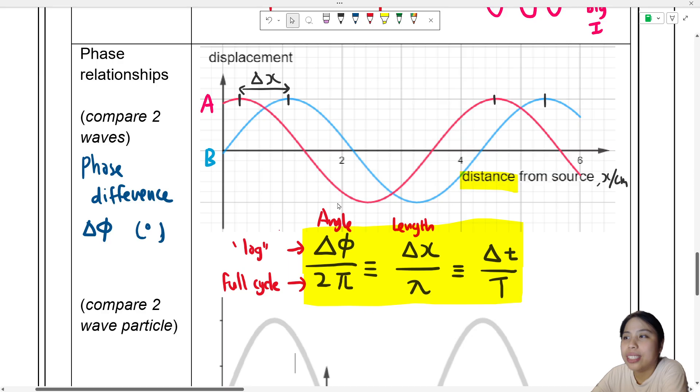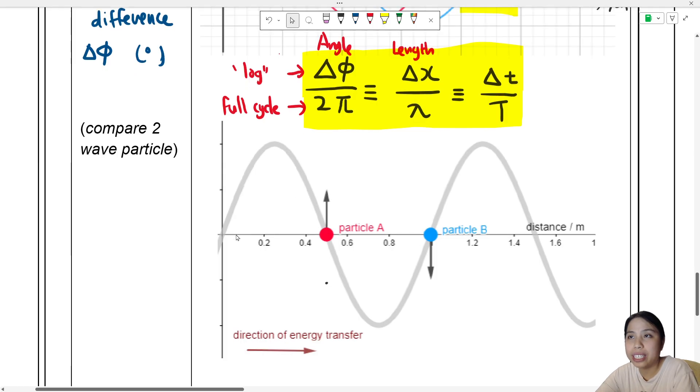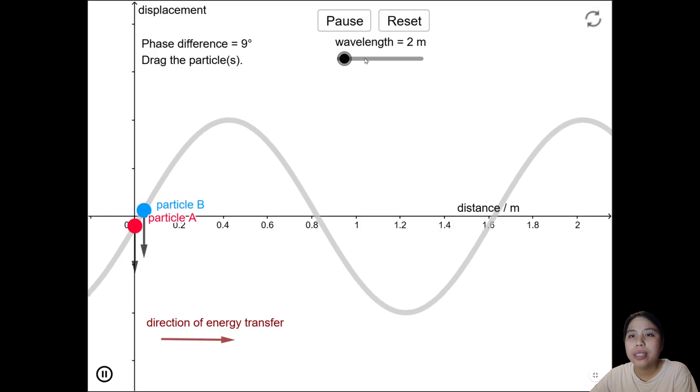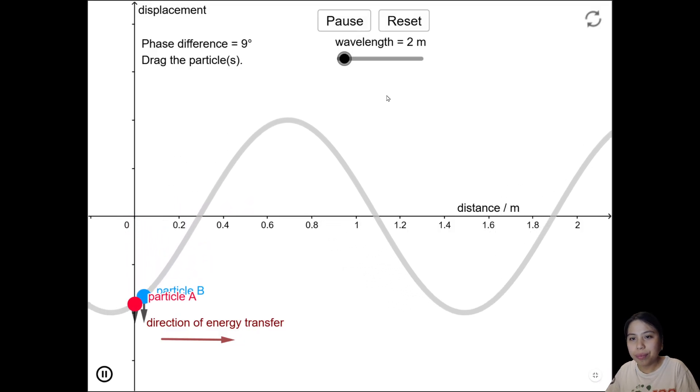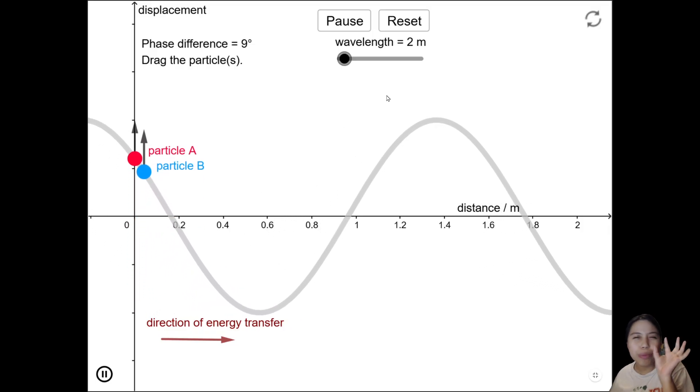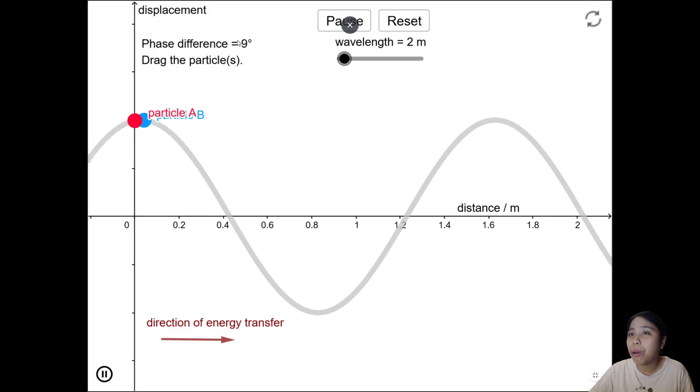Okay, next: sometimes instead of comparing two waves, you actually compare two particles. The same formula applies, but let's look at the motion of the particle first. Okay, here's our friends, particle A and particle B. Let's see how they move. So according to theory, if their phase difference is zero, means they're literally together - they should go down together and up together. Very little lag, very small lag, so that's why it has a very small phase difference.